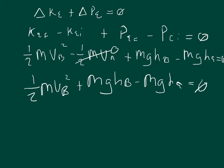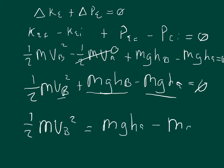Don't forget to keep the squared term — kinetic energy is one-half mv². Isolating velocity, we add m·g·h_A to the other side and subtract m·g·h_B, giving: one-half m·v_B² = m·g·h_A − m·g·h_B. Since mass appears on both sides, we factor it out on the right and divide both sides by m, so mass cancels, leaving: one-half v_B² = g·h_A − g·h_B.